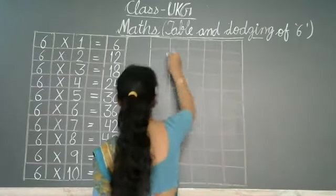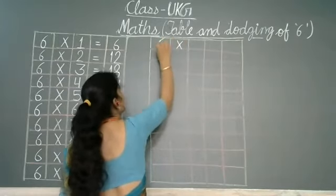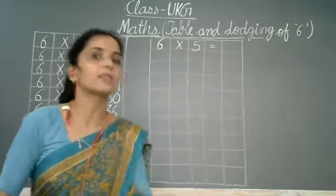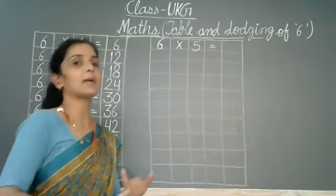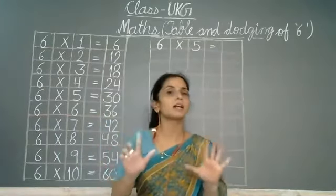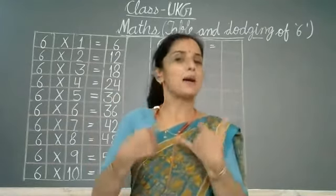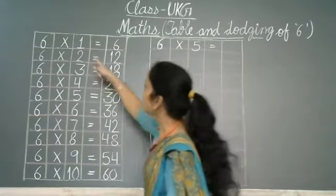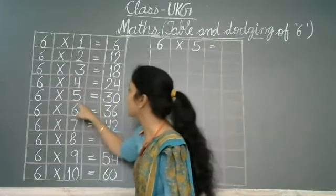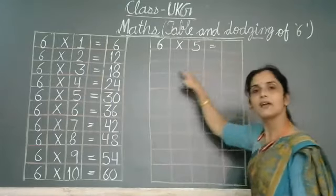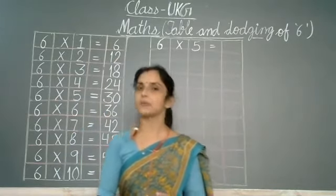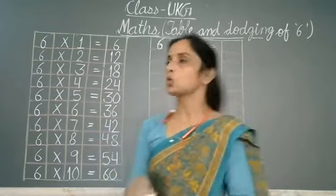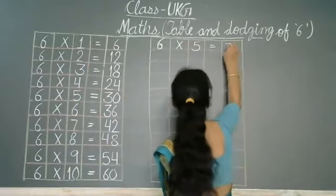Now we will do the dodging of 6. In dodging of 6, we haven't learned the table of 6 by heart yet — we did it just today. So we'll practice 2 to 3 times. For example, 6 fives are — there are 5 here — so 6 fives are 30. I have written 30 here, so you also write 30. Once the table is learned, you can quickly reply when anyone asks — 6 fives are 30.